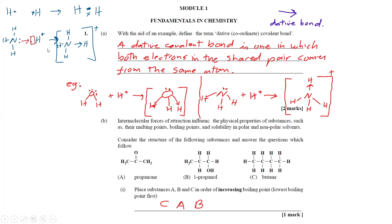We go from ammonia plus the proton to give the ammonium ion. We have another example with water bonding with a proton — one of the lone pairs of electrons on oxygen shares into the empty orbital of H⁺, so both electrons in the shared pair come from the oxygen atom, none from the H⁺.